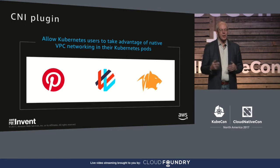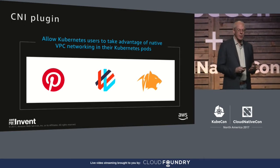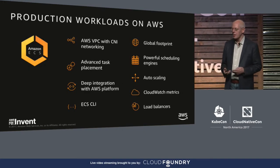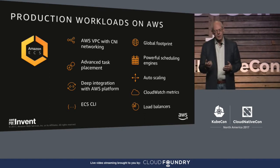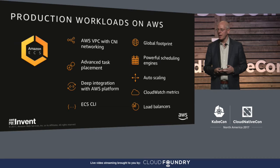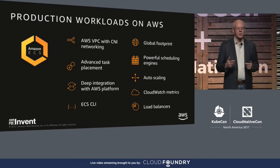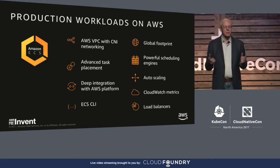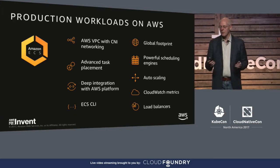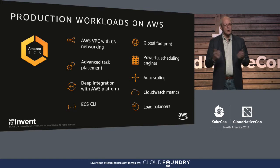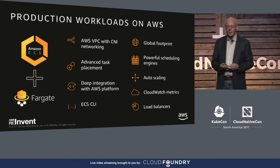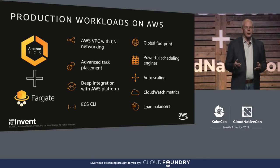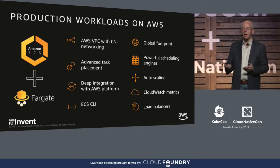We've got the changes in there and we're in the process of working them through upstream, but this is already in production at AWS in ECS. ECS is the native container service at AWS at very large scale — we're currently managing over a hundred thousand clusters, not containers, over a hundred thousand clusters with ECS. Some of those clusters have tens of thousands of containers and it's a multi-tenant service. We've already got CNI baked into all of that. I wanted to talk about a new feature we announced last week called Fargate, which is now also integrated into ECS and we're looking at how to bring it to other container schedulers.